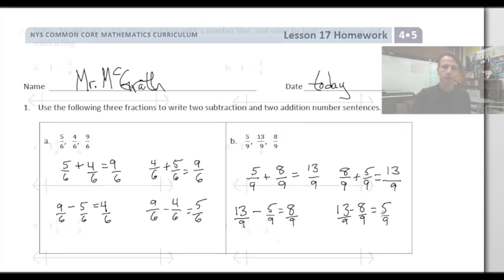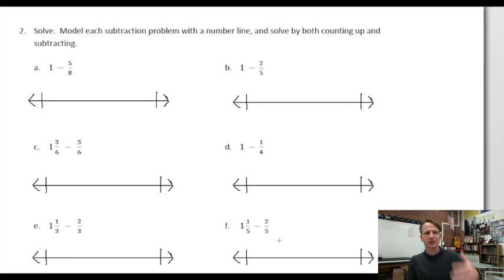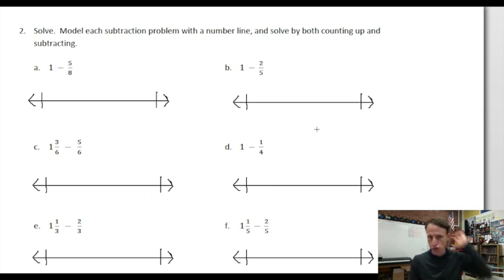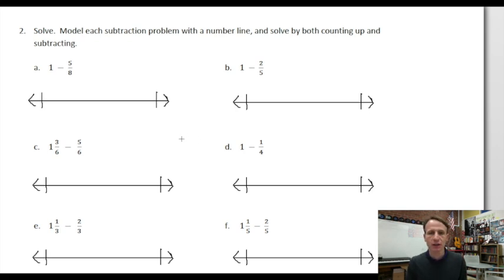Moving on to number two — we have six examples, and we're doing subtraction on all of them. On three we're subtracting from one whole, and on three we're subtracting from a mixed number. Our instructions are to solve and model each subtraction problem with a number line, solving by both counting up and subtracting.